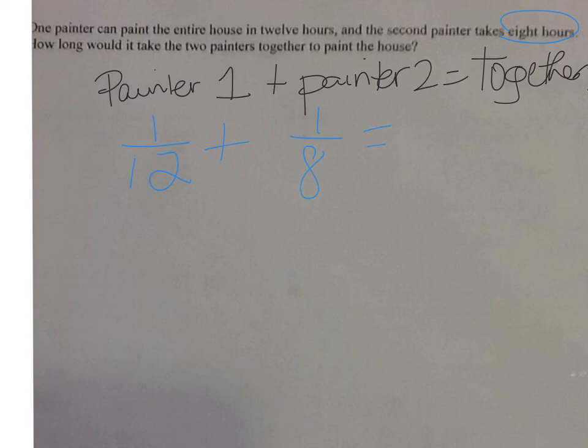And then I want to know how long will it take them to paint the entire house. I don't know how long it takes them to paint the entire house. So I'm going to make that X hours. And then I want 1 over X. How long does it take?